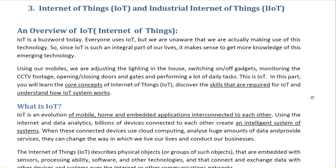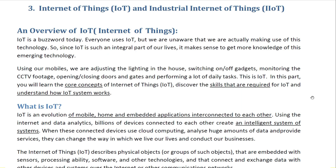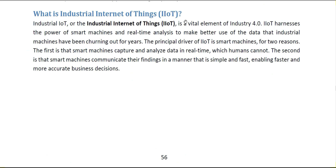Hello students. The third topic is Internet of Things and Industrial Internet of Things. Industrial IoT, or IIoT, is a vital element of Industry 4.0. IoT means Industrial Internet of Things — using smart things in industry to make the business run better.